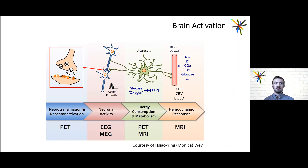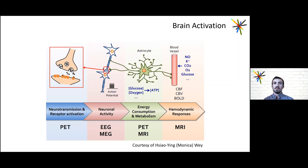Jay gave a really good brief introduction on the BOLD signal. What we want to get is neuronal activity, but what we're using to get it is a few steps removed — looking at the hemodynamic response, whether that's cerebral blood flow, cerebral blood volume, or the BOLD signal. I'm going to be focusing on the physiologic noise sources he mentioned.